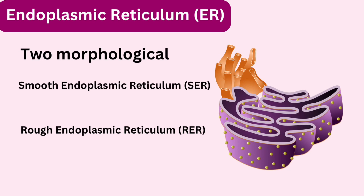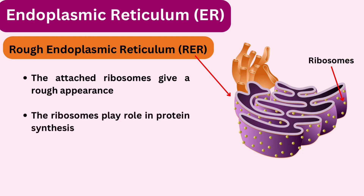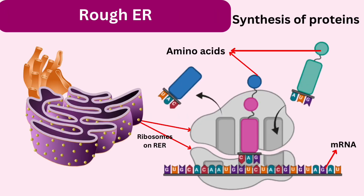There are two morphological forms of ER: a rough form with ribosomes and a smooth form without ribosomes. The rough endoplasmic reticulum has attached ribosomes on its cytoplasmic surface, giving it a rough appearance under a microscope. These ribosomes play a crucial role in protein synthesis, translating the genetic code from mRNA into proteins.